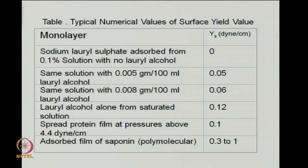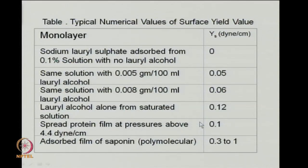Looking at some magnitudes: sodium lauryl sulfate with no lauryl alcohol gives yield stress of 0 dynes/cm (gaseous film). With 0.005 g per 100 mL of lauryl alcohol, the yield value is 0.05 dynes/cm. With only lauryl alcohol from a saturated solution, the value is about 0.12 dynes/cm. For spread protein films, about 0.1 dynes/cm. Polymolecular compounds like adsorbed films of saponin can give yield values between 0.3 and 1 dynes/cm — that can be regarded as substantial.